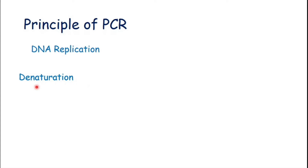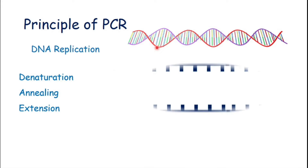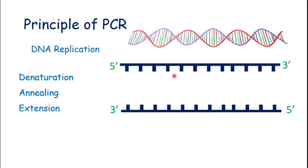There are three steps of PCR: the first one is denaturation, the second one is annealing, and the third one is extension, which we will discuss each step in detail in just a few minutes. As we know, DNA is a double helix structure and both of its strands are attached together by hydrogen bonds.